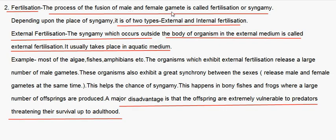Fertilization: The process of fusion of the male and female gamete is called fertilization or syngamy. Depending upon the place of syngamy, it is of two types: external and internal fertilization. External fertilization occurs outside the body in an external medium, usually in an aquatic medium — for example, most algae, fishes, and amphibians. Organisms with external fertilization release a large number of male gametes and exhibit great synchrony between the sexes, releasing gametes at the same time. A major disadvantage is that offspring are extremely vulnerable to predators.